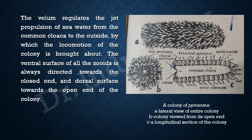When water is forced out through the cloacal aperture — a large amount, since thousands of acidozoids release water through their atrial apertures into the common cloaca — it is expelled with force like a propulsion. This acts as an action, and the reaction is the movement of the colony in the opposite direction. This jet propulsion constitutes the locomotion of the colony, allowing it to move from one point to another.